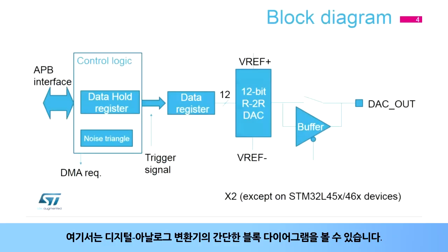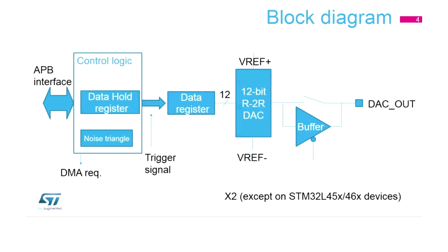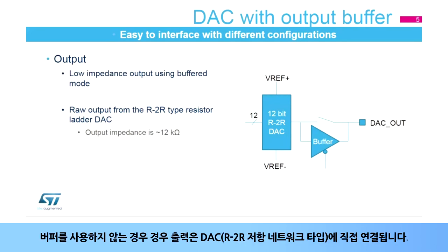Here you can see the simplified block diagram of the digital to analog converter. The STM32L4 integrates two of them, except on STM32L45X46X devices, where only one DAC is implemented. The DAC output can be buffered for low impedance loads. When unbuffered, the output is directly connected to the R2R resistor ladder network type of DAC.